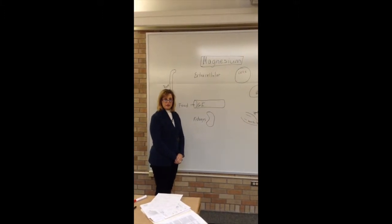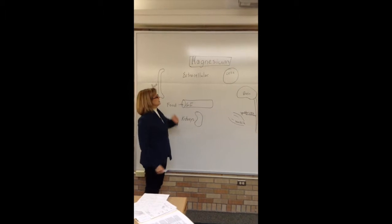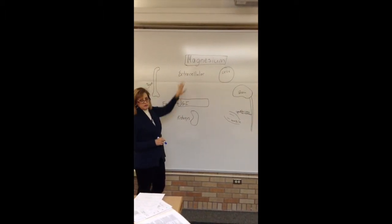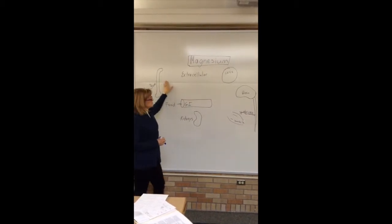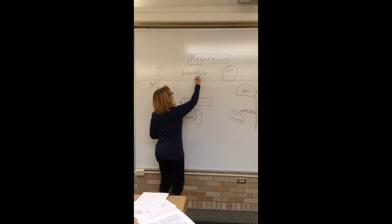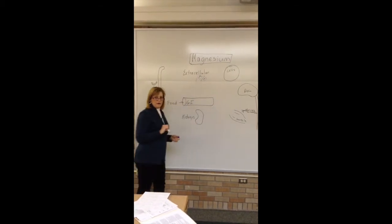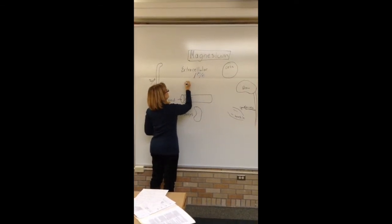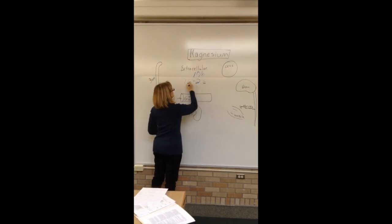Today we're going to talk about the electrolyte of magnesium. Magnesium is our fifth electrolyte for this series. We do find magnesium in your bones as well as your cells in your body. We only find about 1% in your extracellular area, and that 1% — the range in your serum — is 1.6 to 2.6.